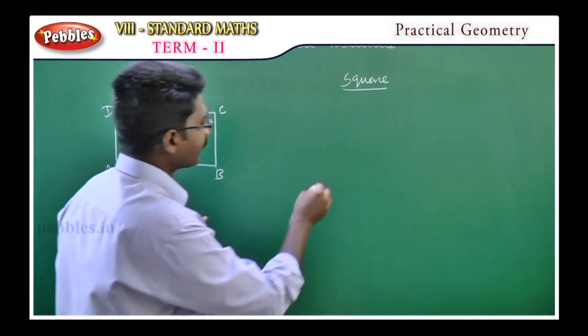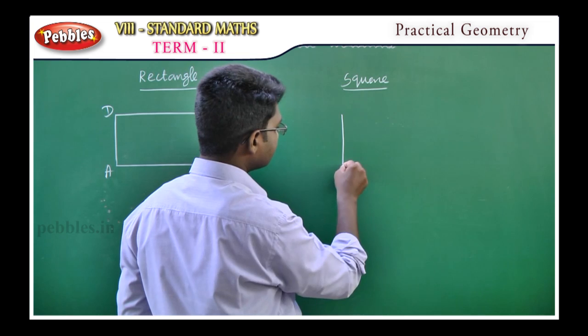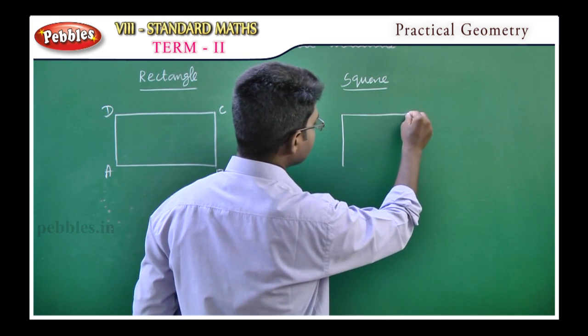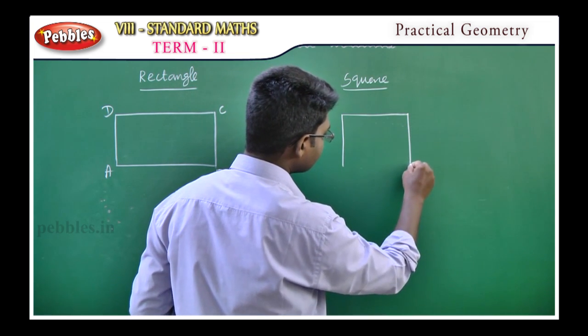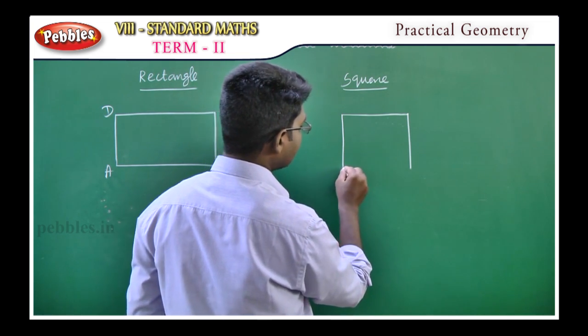The square is a rectangle. All the sides are equal. The vertices are A, B, C, D.